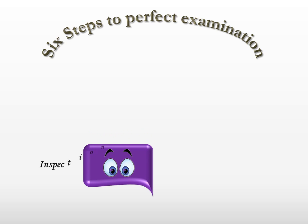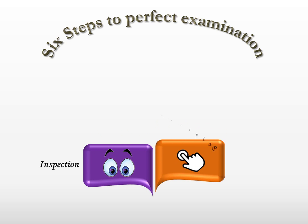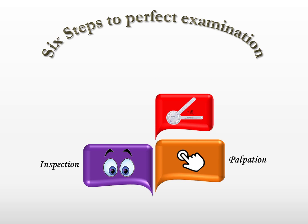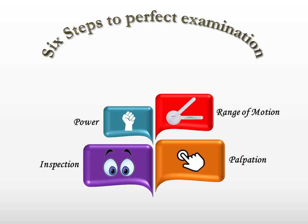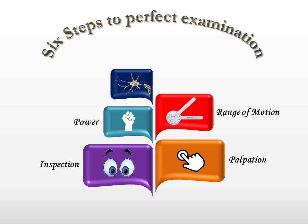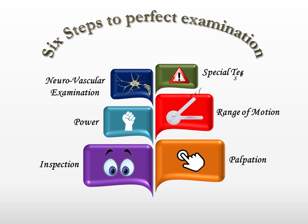We follow six steps to perfect examination in orthopedics. Step one is inspection, where you see. Step two is palpation, where you touch. Step three is assessment of range of motion. Step four is assessing the power of the muscles involved. Step five is the neurovascular examination. And step six would be special tests, if any, for that particular part.